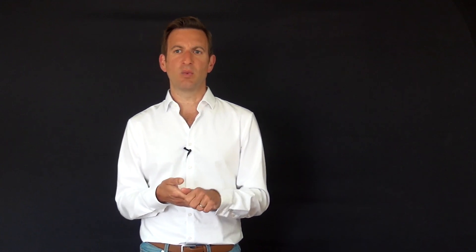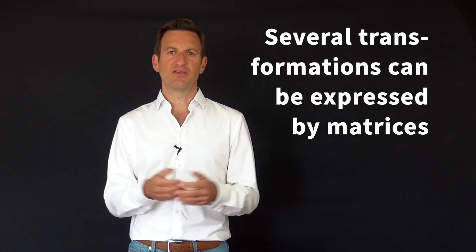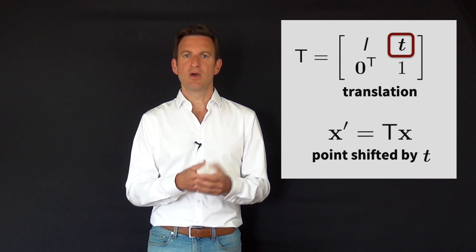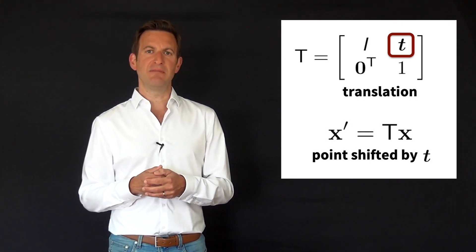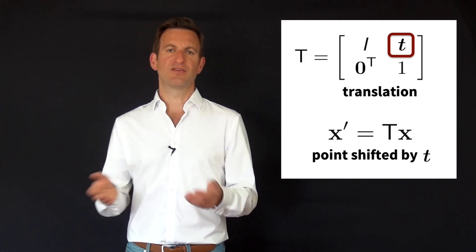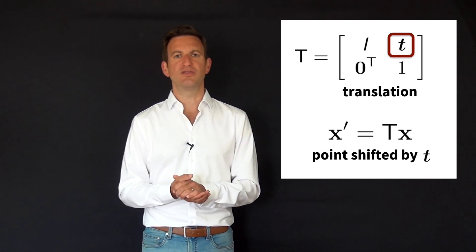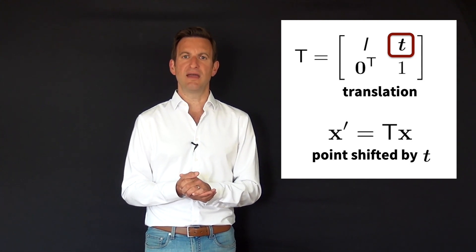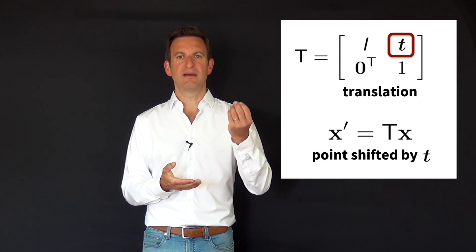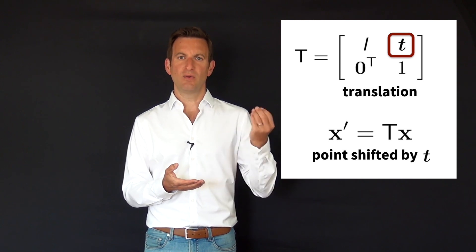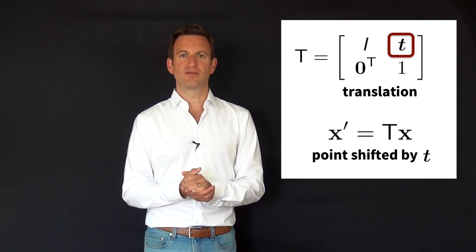With this additional dimension, we can express certain transformations elegantly through a simple matrix. For example, with a translation matrix, if we multiply this matrix with a vector, the vector gets translated by the translation vector t embedded in the matrix. So by multiplying a vector with this matrix, the vector gets translated by t — something that cannot be done in standard Euclidean coordinates.